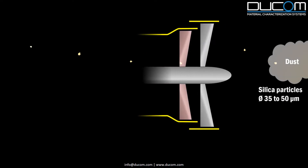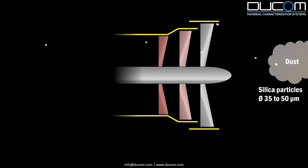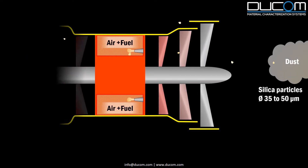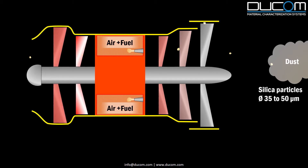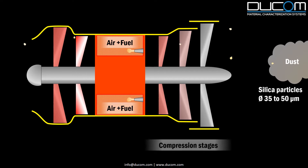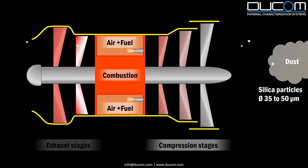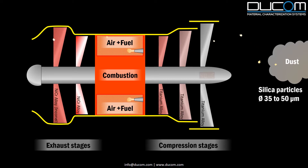Turbine blades in an engine operating at temperature above 900 degrees Celsius are exposed to sand particles that escape through the combustion zone. It leads to loss of material in turbine blades. Such a phenomenon is known as erosion.